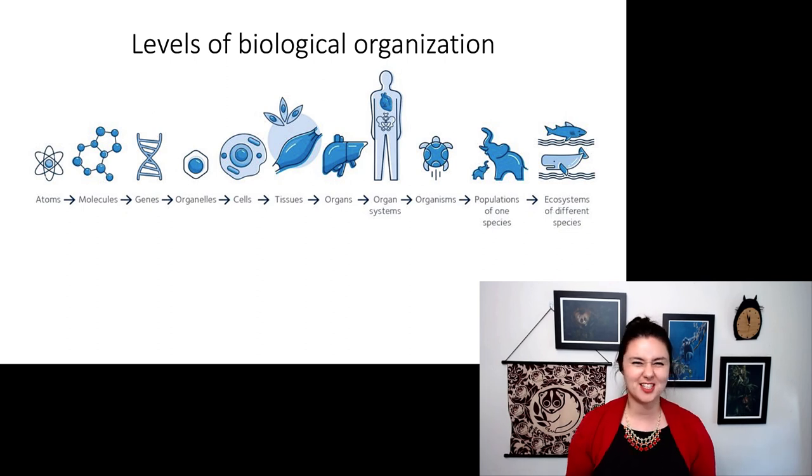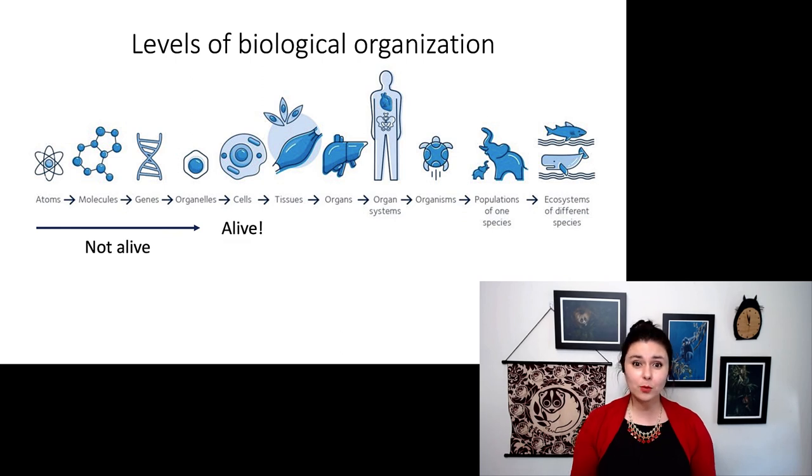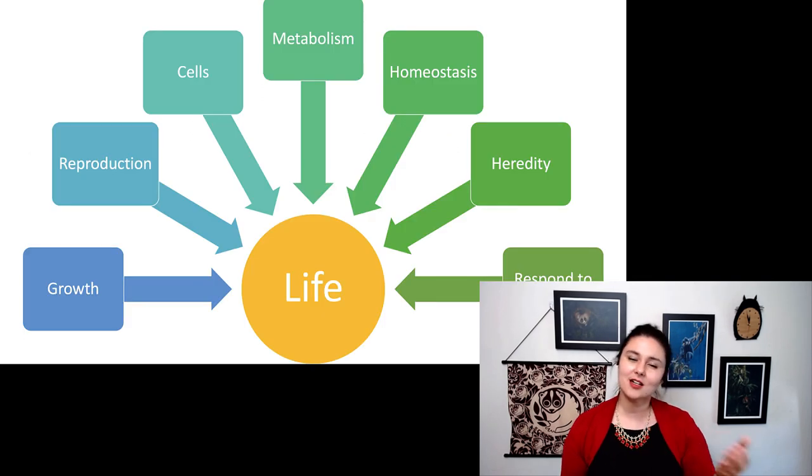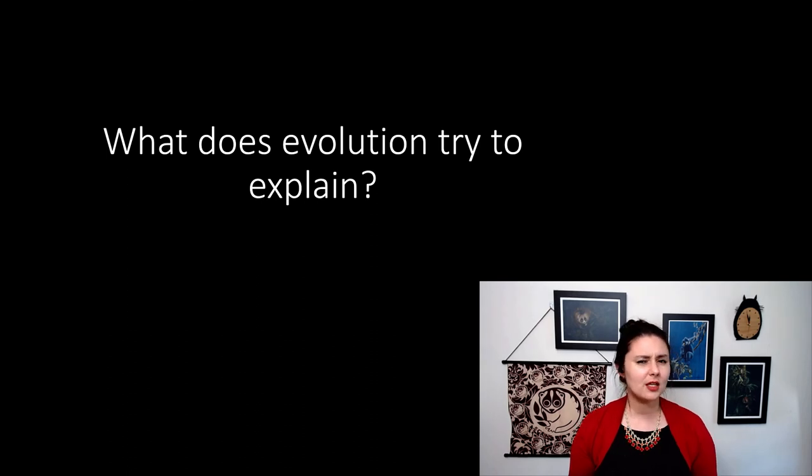You might remember our levels of biological organization. Everything up until here isn't alive. But when we put it all together and have a cell, now we finally have a living organism. As a reminder, these are all of the things that go into life that we know today. Growth, reproduction, cells, metabolism, homeostasis, heredity, and responding to stimuli. So now that we've talked about all these things, and we're going to go more in depth into evolution and how we think life unfolded across the earth, can you explain what does evolution try to explain? Have a great week.